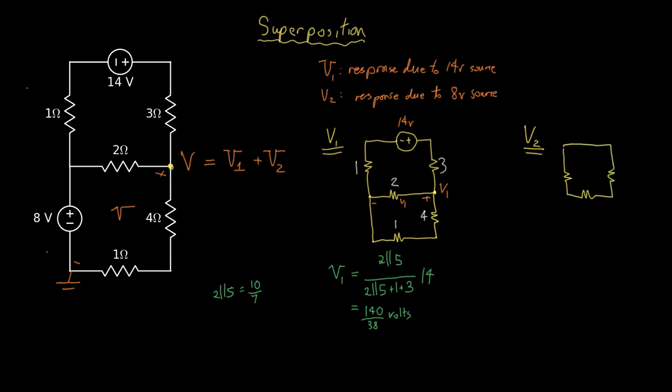Replace the 14 volt source by turning it off, setting it to zero, and we'll leave the 8 volt source as it is. The voltage we're solving for is this voltage, V2.